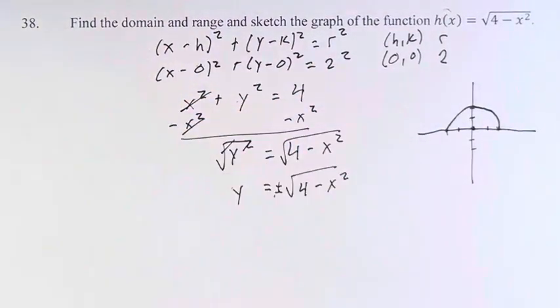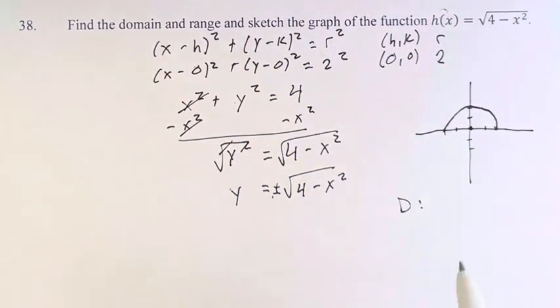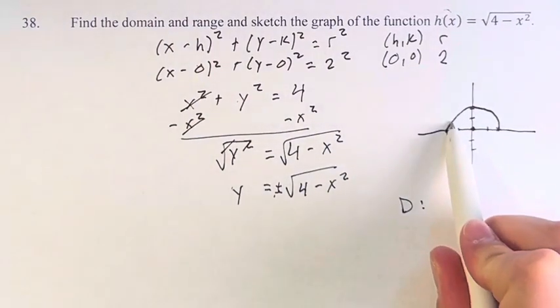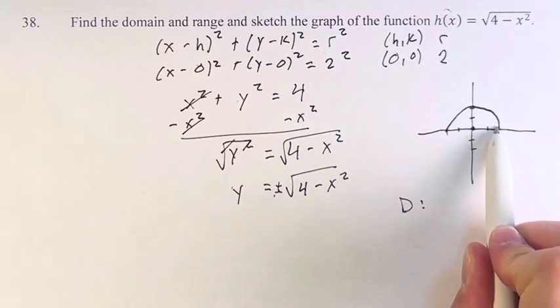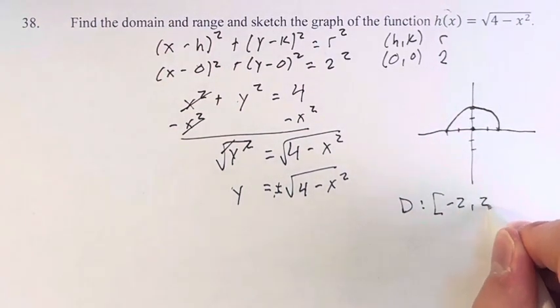Now the domain and range is really easy. This is why I did the graph first. We can just look at it and say, the domain is all of the x values that the function can take. Going from left to right, we start at -2, we can take all these values up to positive 2. So we have -2 to 2 inclusive.